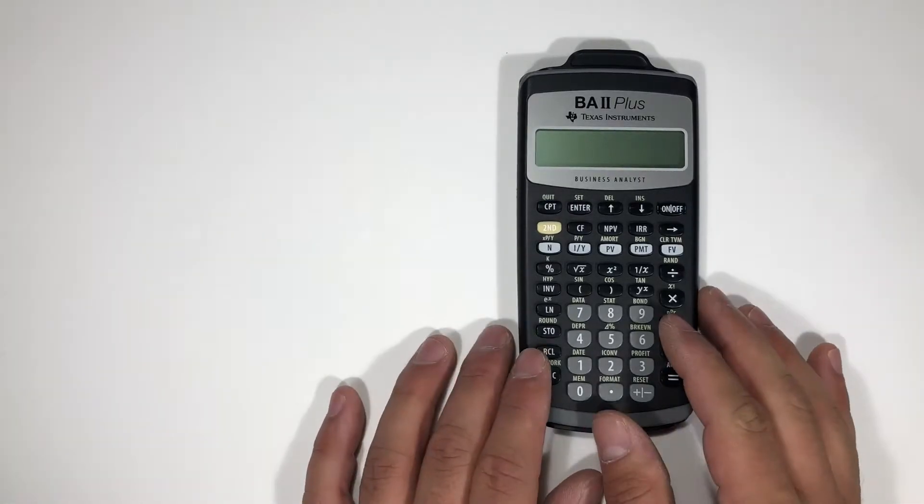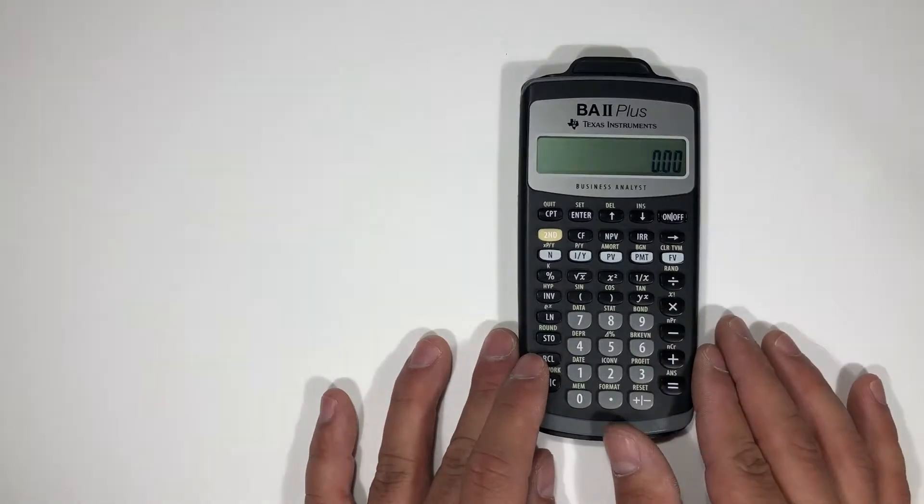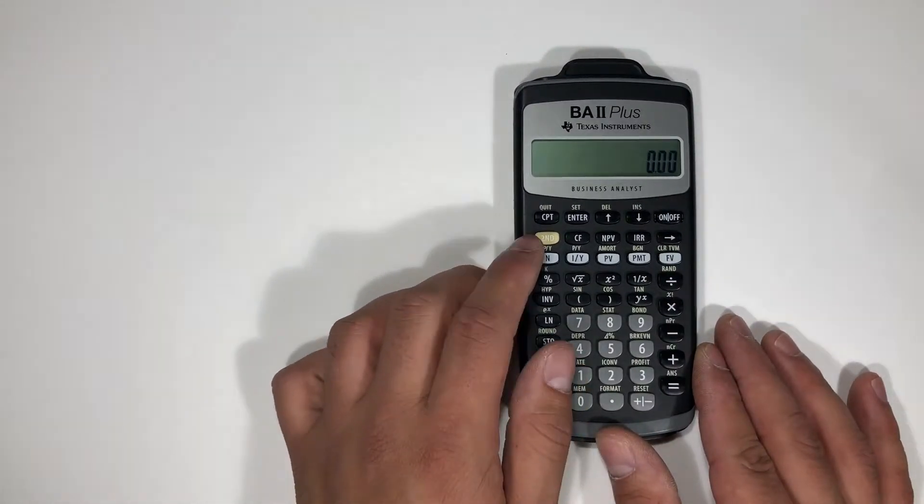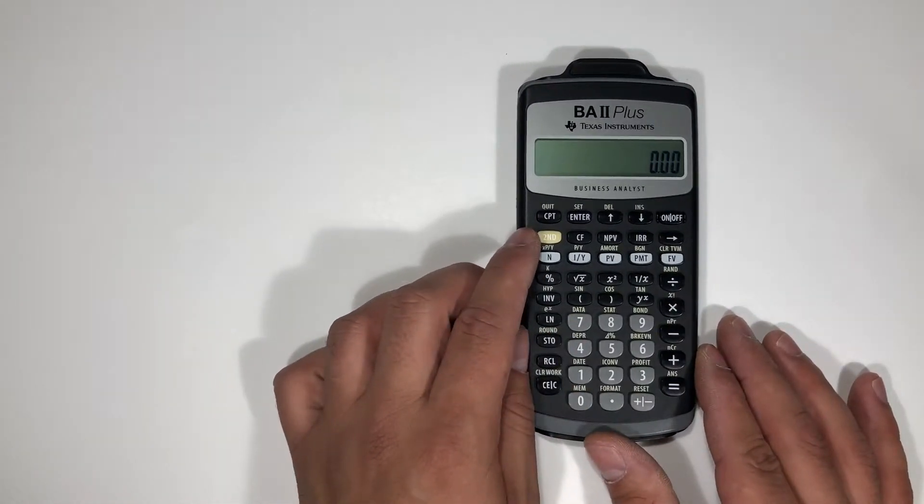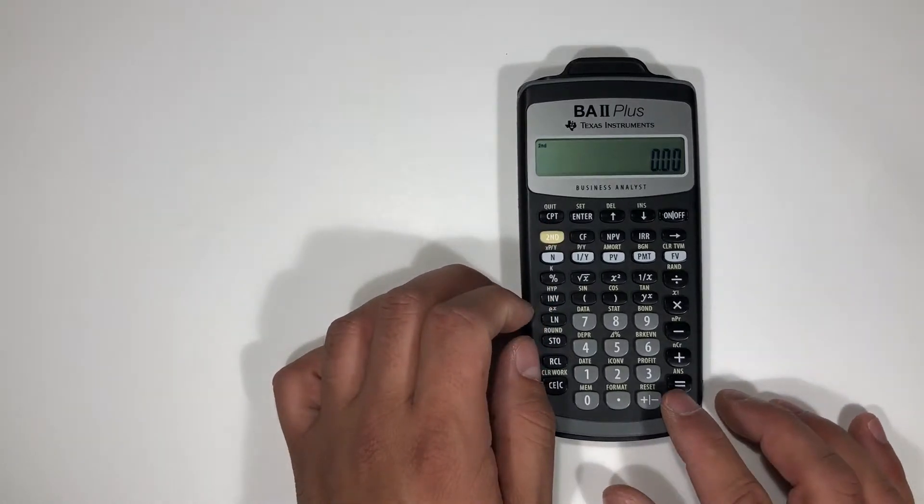In your calculator there's a feature called last answer. I'm going to turn this on and it stores in the calculator as the last result of a calculation. I'm gonna hit second down here, then hit the answer button just above the equal sign.